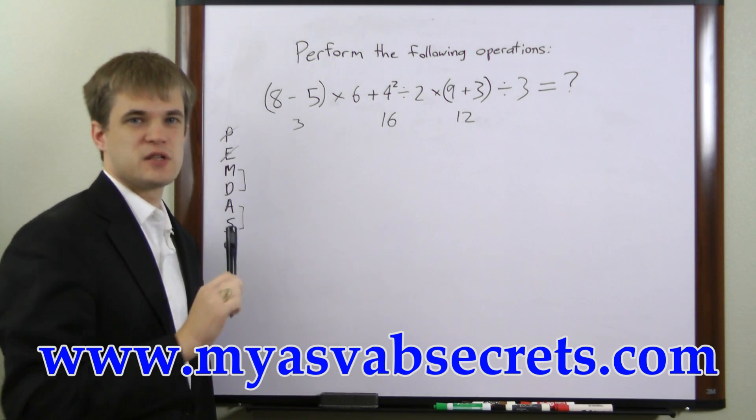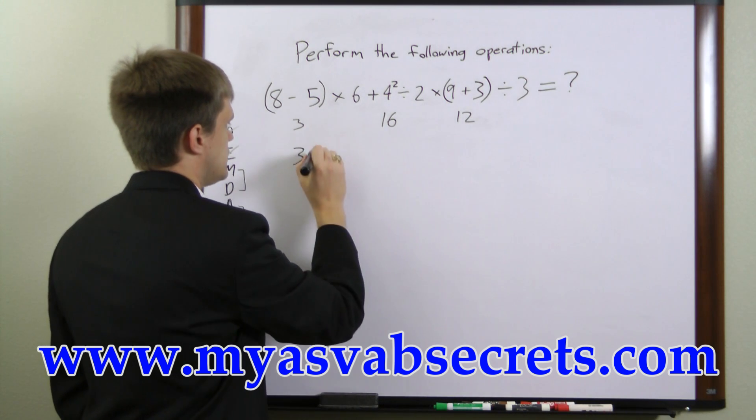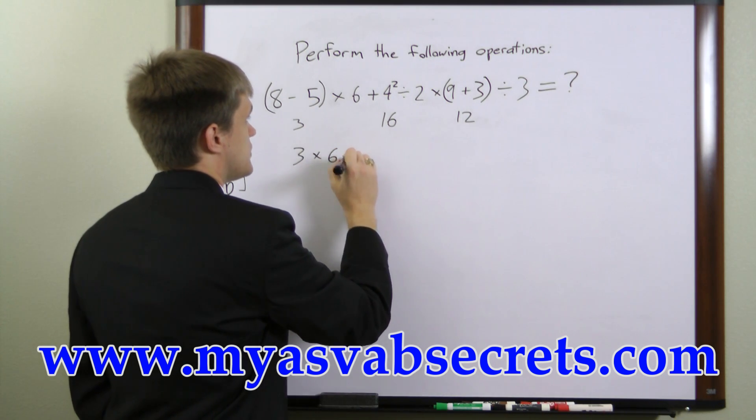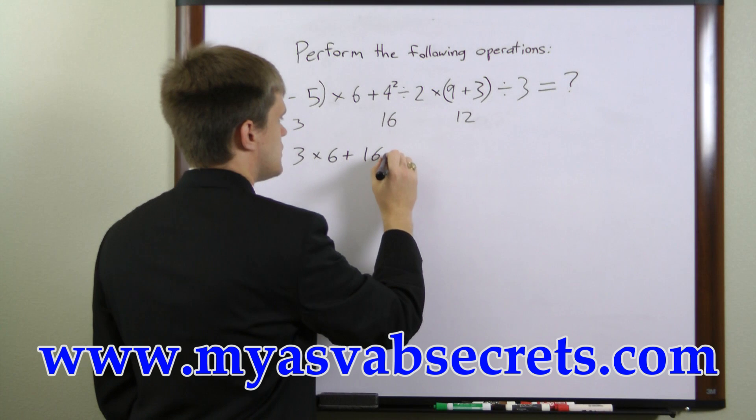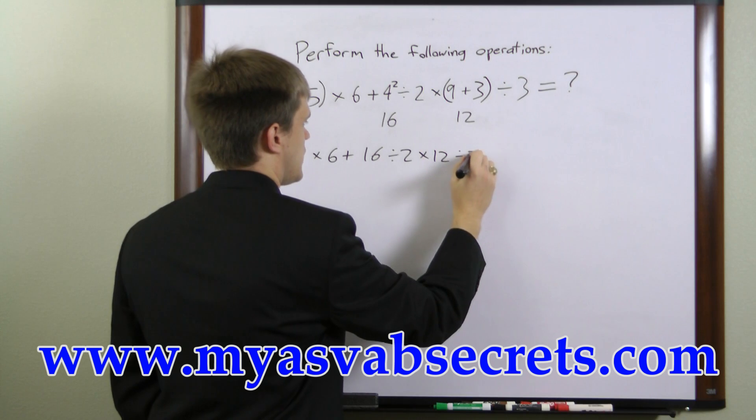Next is multiplication and division. But first let's rewrite this to see what's left. We have 3 times 6 plus 16 divided by 2 times 12 divided by 3.